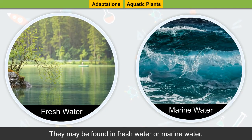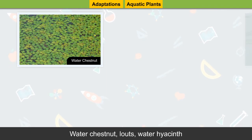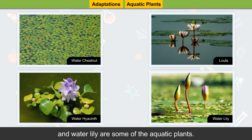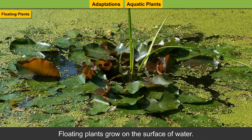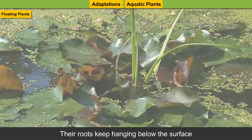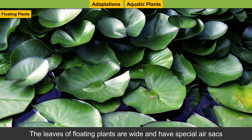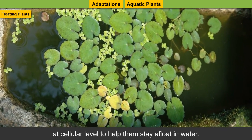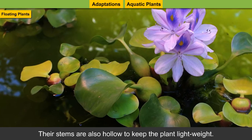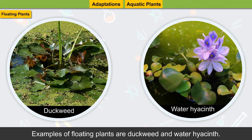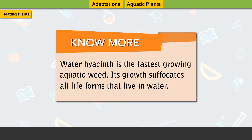Aquatic plants are the plants that grow in water, found in fresh water or marine water. Water chestnut, lotus, water hyacinth, and water lily are some examples. Floating plants grow on the surface of the water and are not rooted to the floor of the water body. Their roots hang below the surface and absorb water and minerals from their surroundings. The leaves are wide with special air sacs at the cellular level to help them stay afloat, and their stems are hollow to keep the plant lightweight. Examples include duckweed and water hyacinth. Water hyacinth is the fastest growing aquatic weed and its growth suffocates all life forms that live in water.